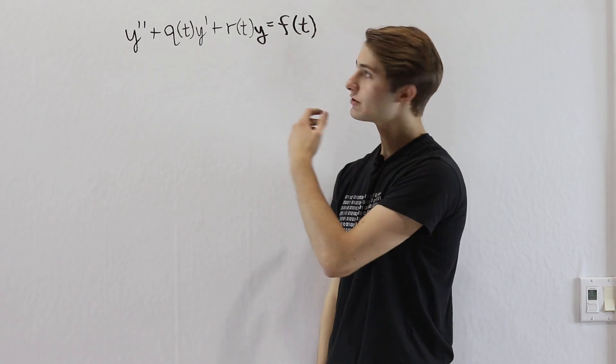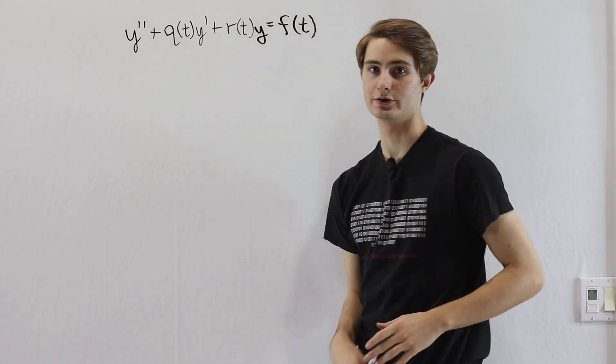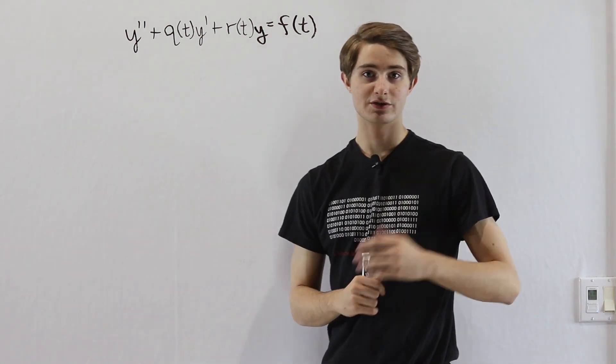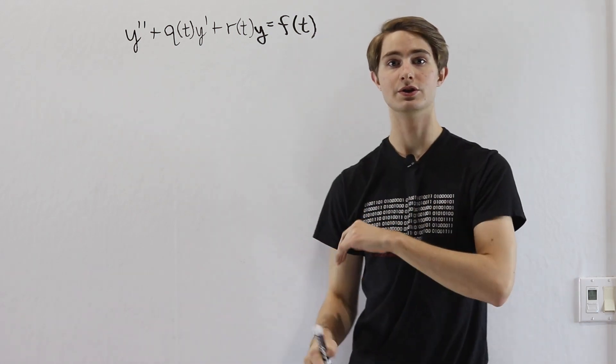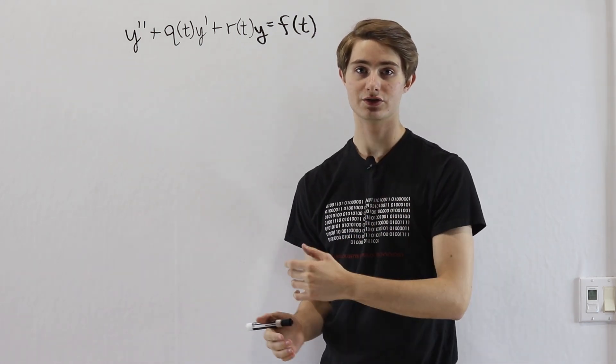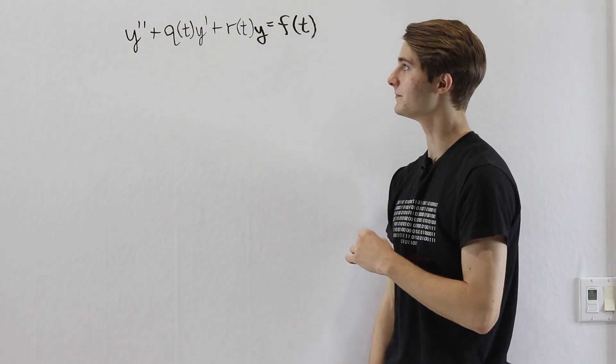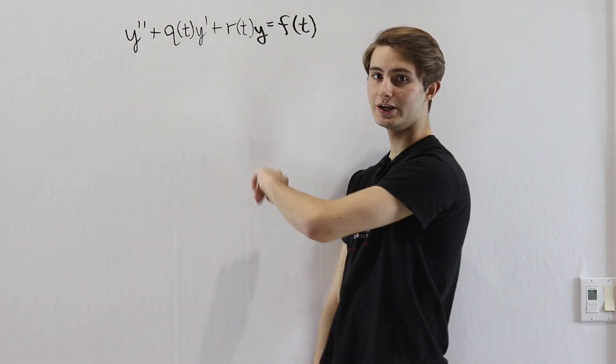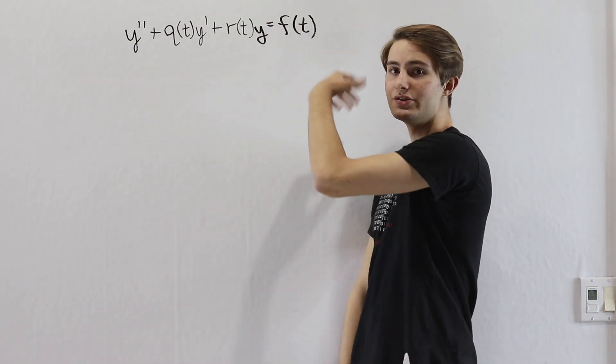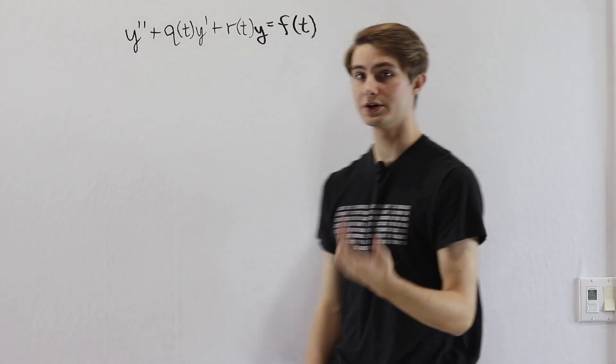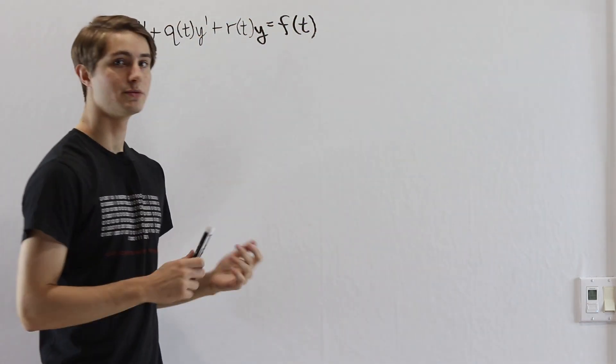When we think about solving the second-order differential equation using variation of parameters, we're going to assume that we already know a homogeneous solution to this differential equation. We've solved this equation for when it equals 0 instead of f(t), which is often easier than solving the original equation.